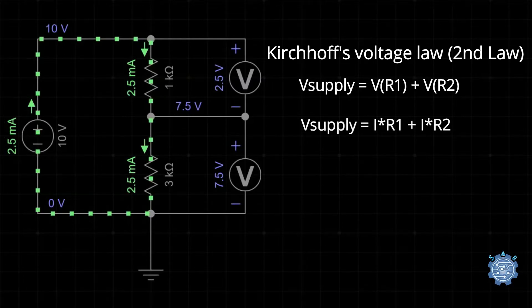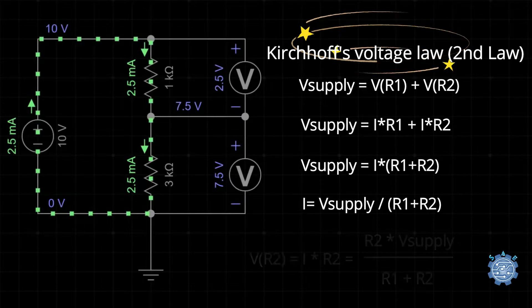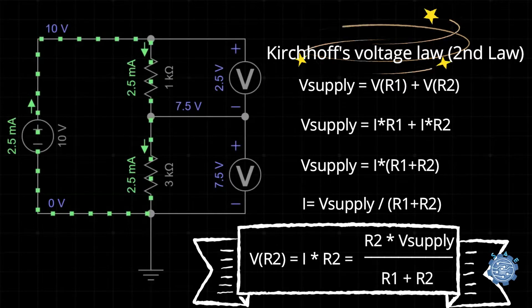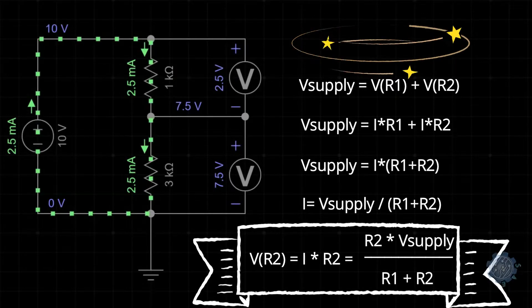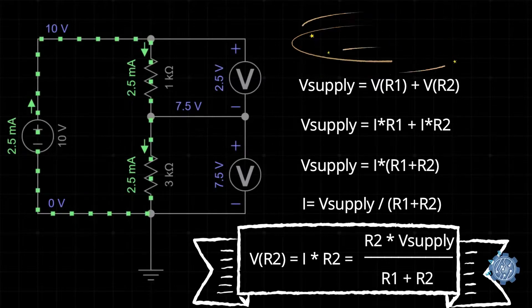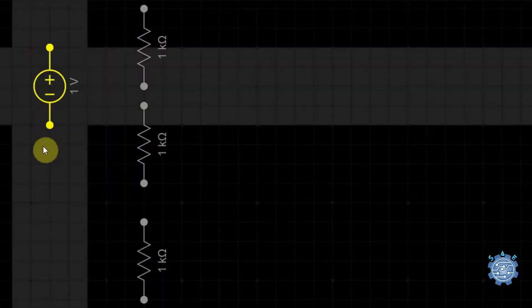From this, we can get the formula that most of us know. Now, what happens if we place more resistors in series?